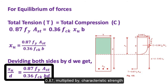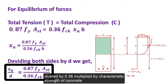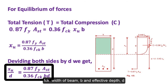x_u / d is equal to (0.87 × f_y × A_st) divided by (0.36 × f_ck × b × d).